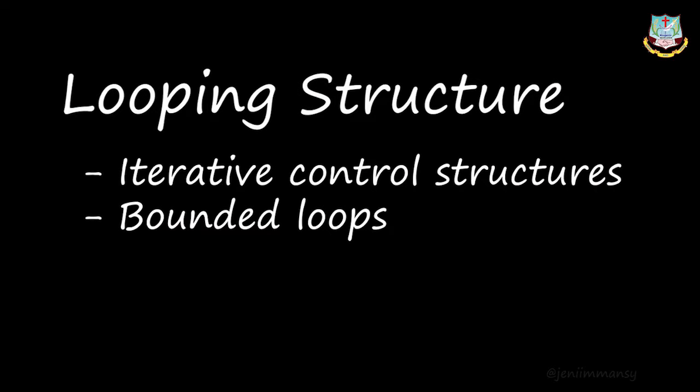Looping structure — from the word itself, what can you understand? Loop means something which is coming repeatedly or iteratively. Iteration is nothing but it means repeating or repetition. In PHP, this loop structure will be an iterative control structure. It will execute the same block of code many times, for a given number of times.